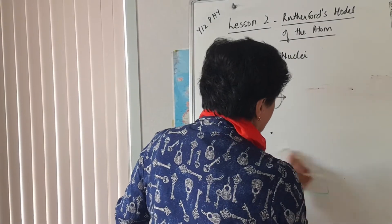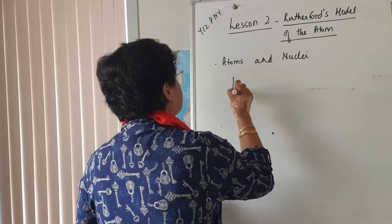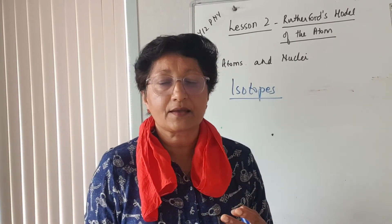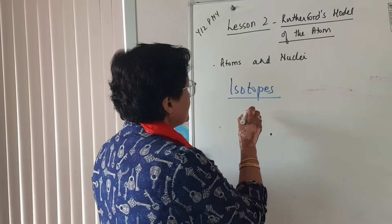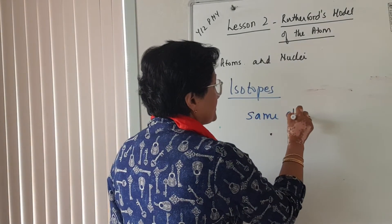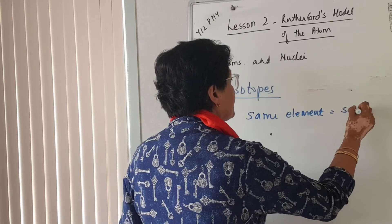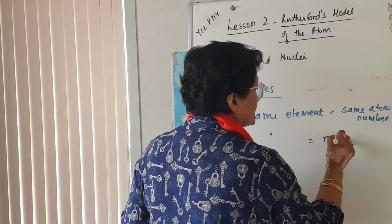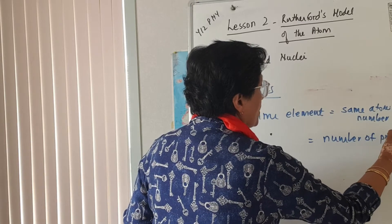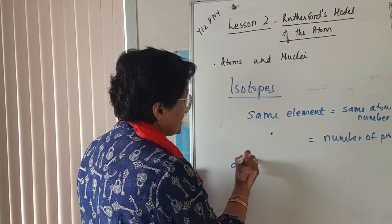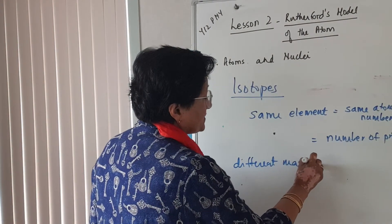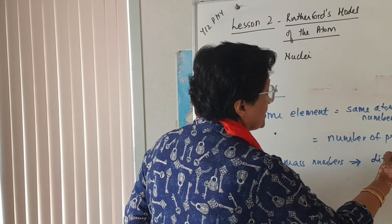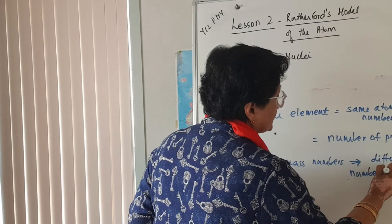The other term we need to look at is isotopes, which you've probably already come across. Isotopes are different forms of the same element. Because they're the same element, they all have the same atomic number, meaning the number of protons is the same. What is different is that they have different mass numbers or nucleon numbers, which means they have different numbers of neutrons.